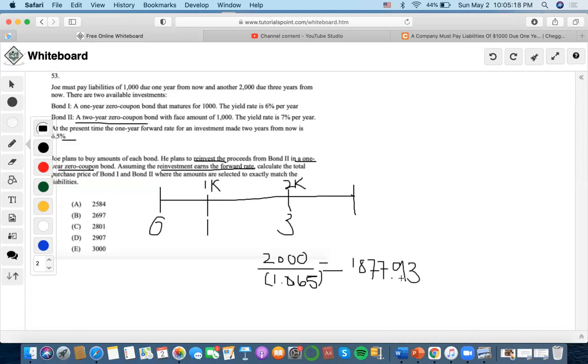Now the next part is that we need to also consider what's happening here. So a two year zero coupon bond with face amount of $1,000, the yield rate is 7% per year. Well, we know that we've already reinvested the original liability and we made it become $1,877.93. Now we're just going to use that as our new payment and use the yield rate discounted by the yield rate of two years.